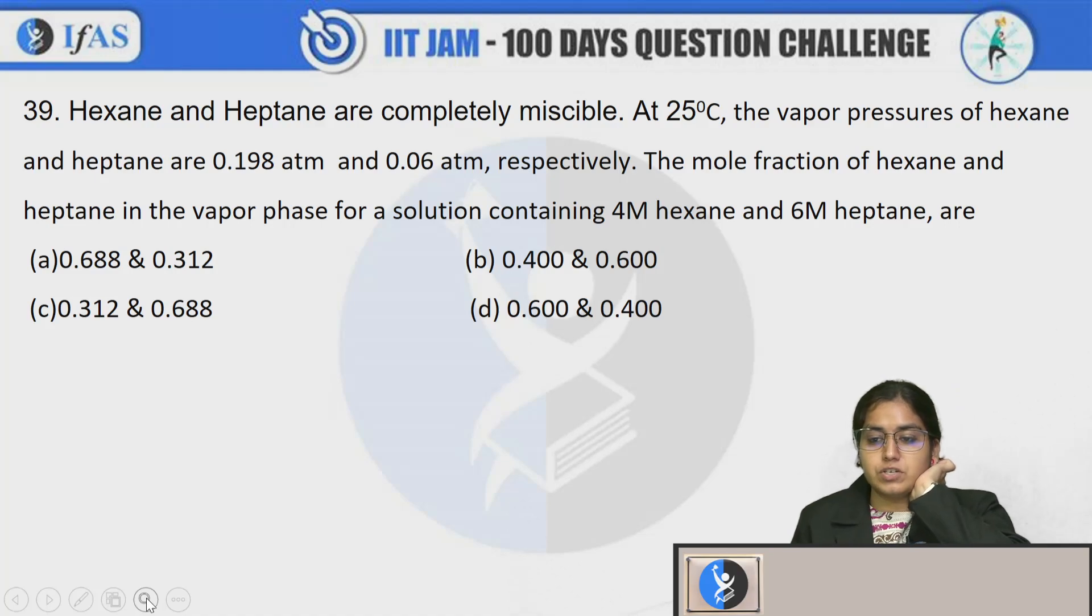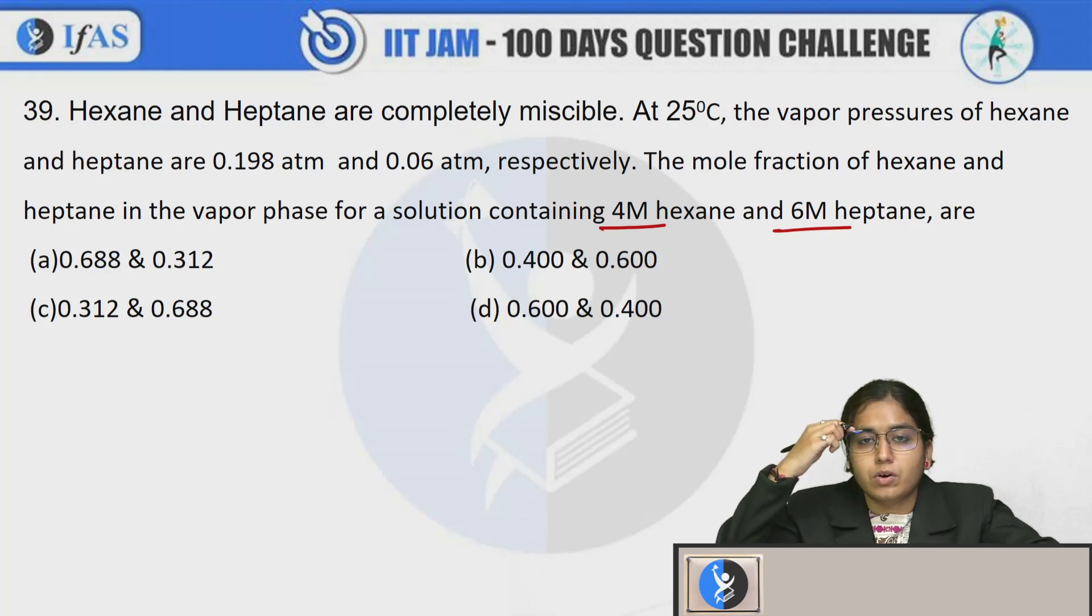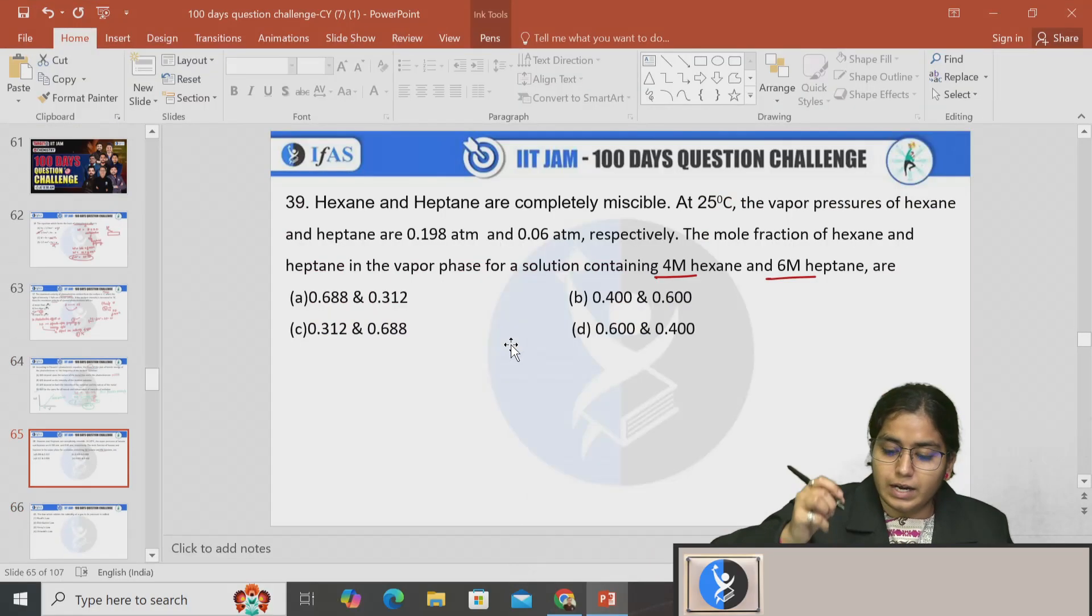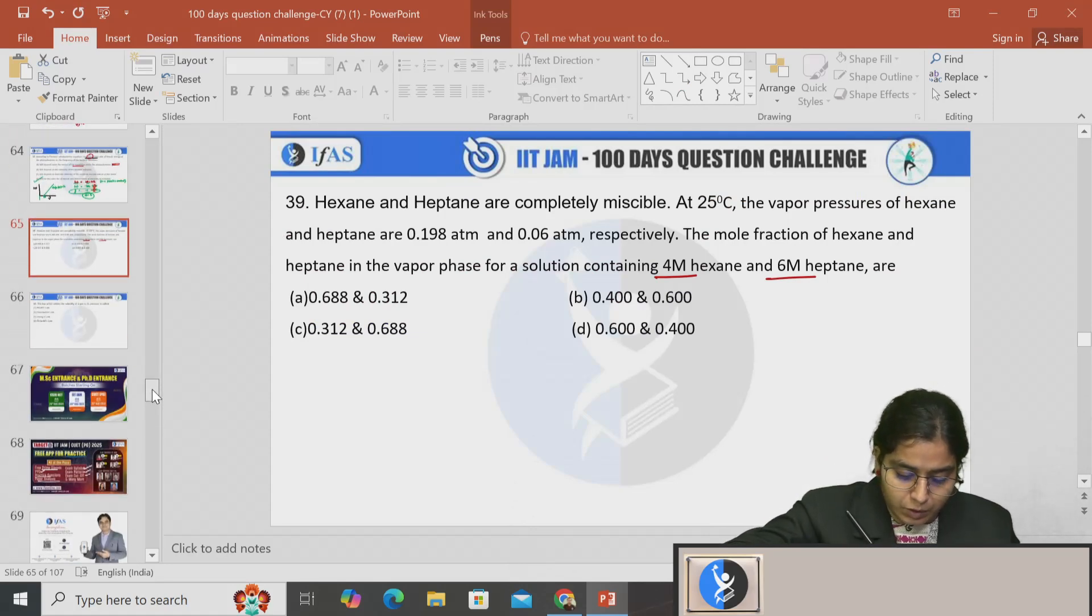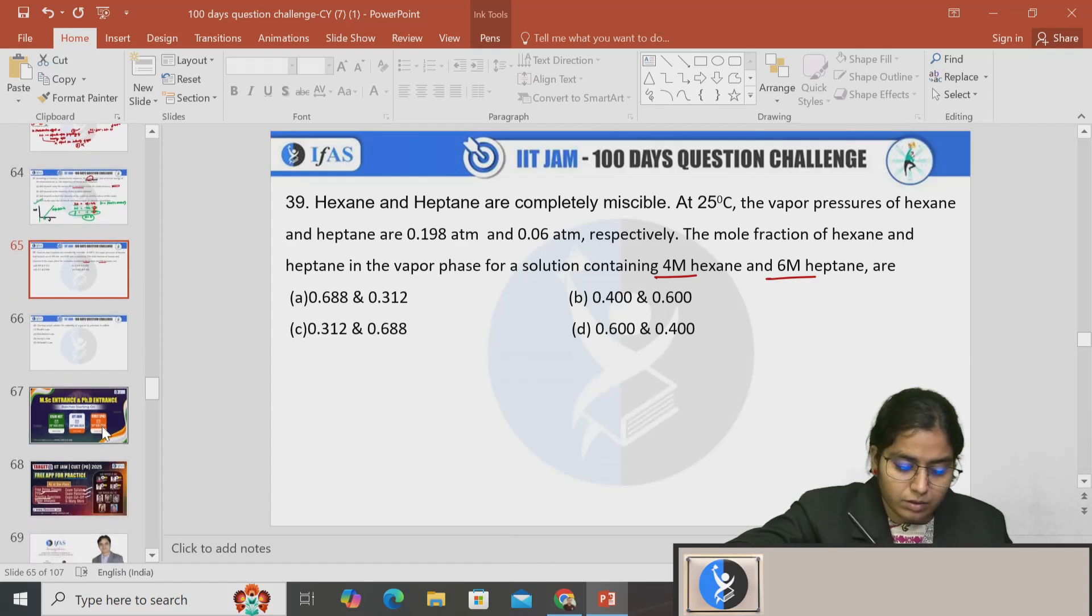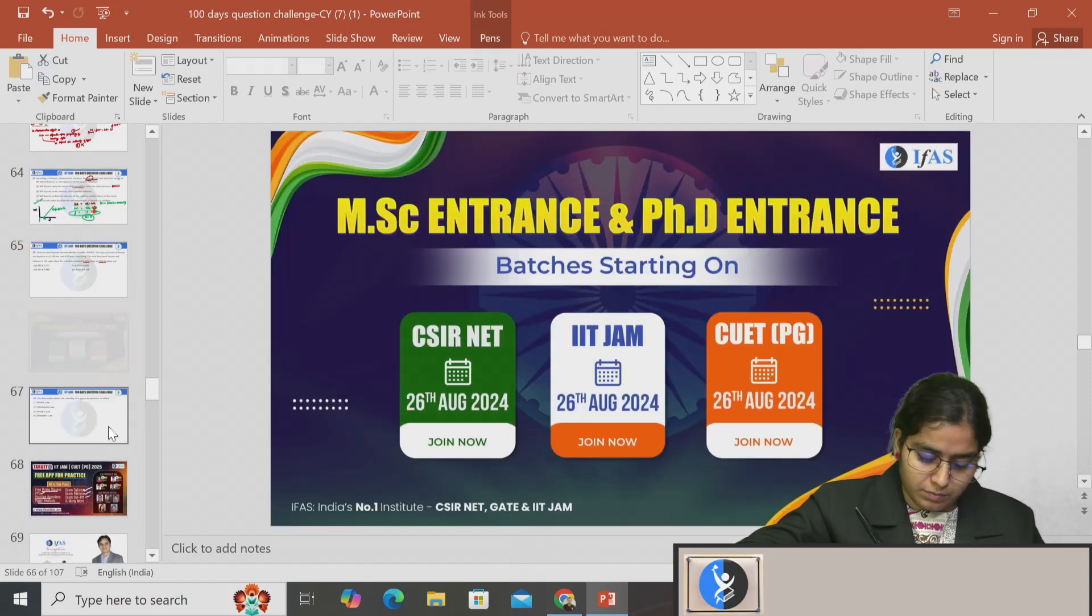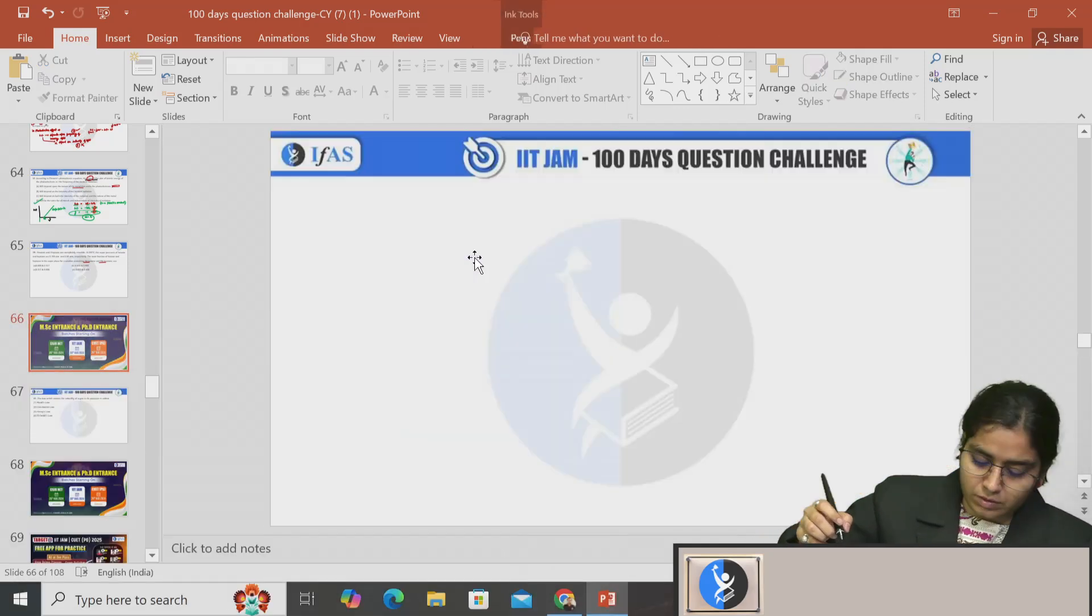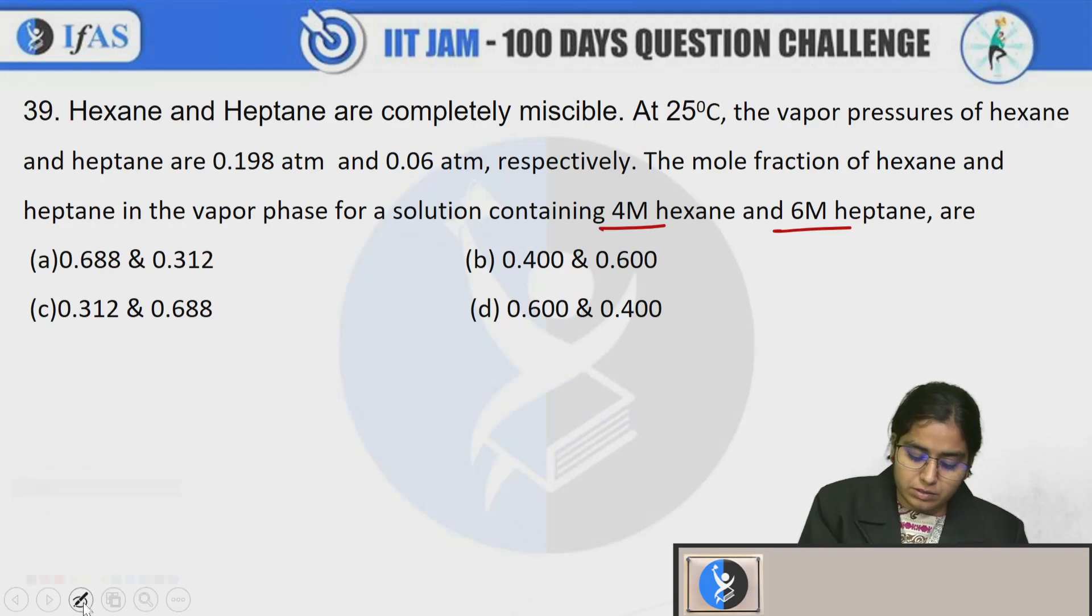If you compare these equations - the vapor pressure of hexane and heptane is 0.198 and 0.06 atm respectively. The mole fraction of hexane and heptane in the vapor phase for a solution containing 4 molar hexane and 6 molar heptane. So you have to solve this question. This is a good question and I think this is a PYQ. We will take a blank page and we will solve it.